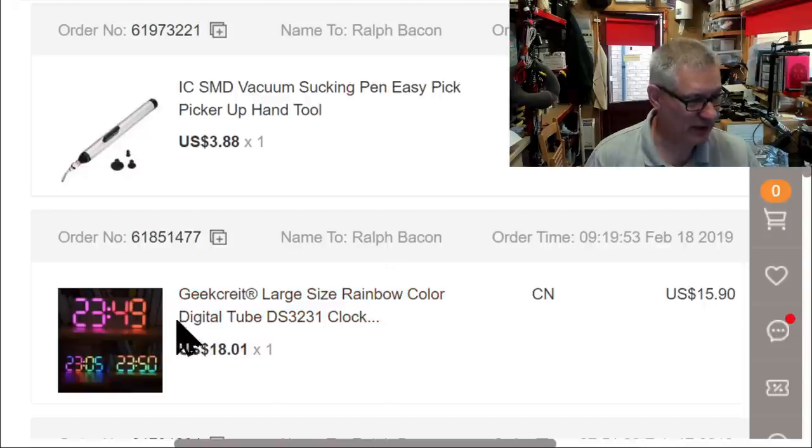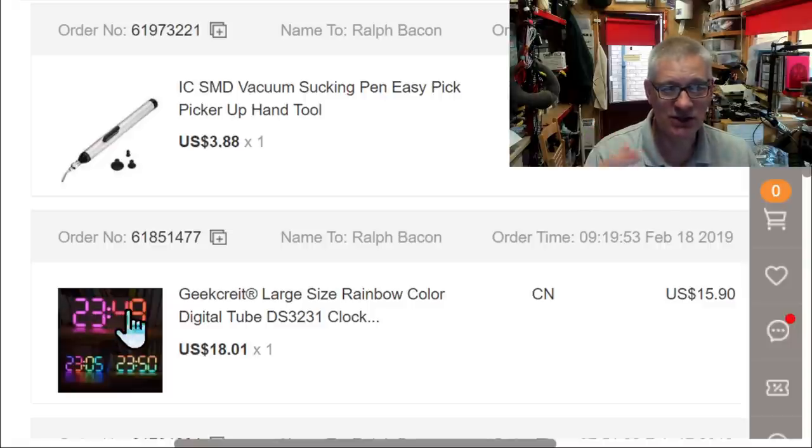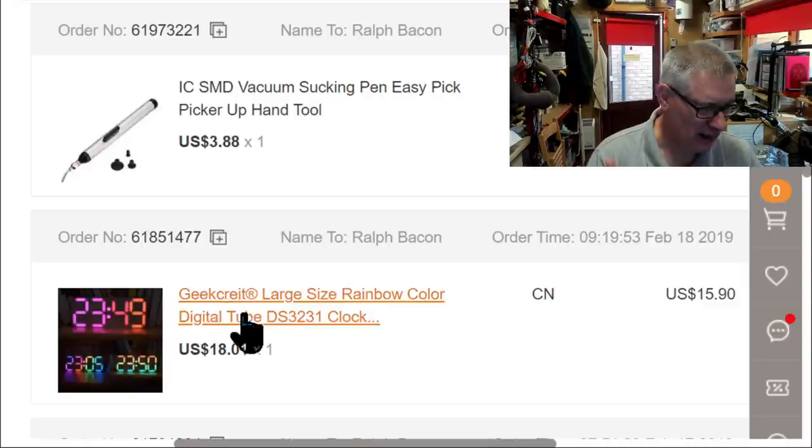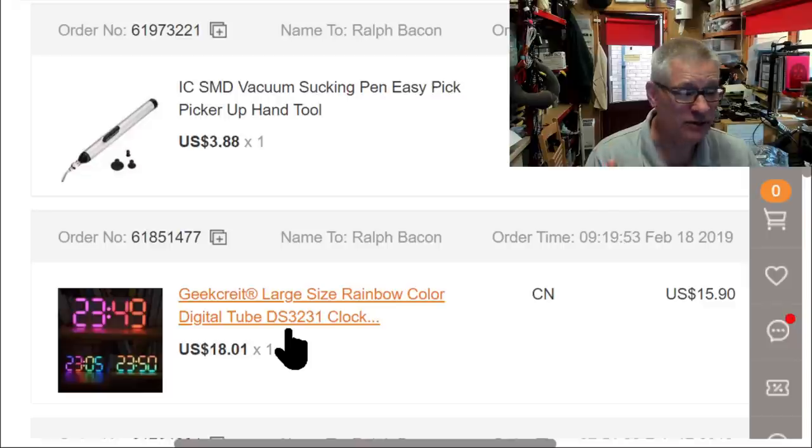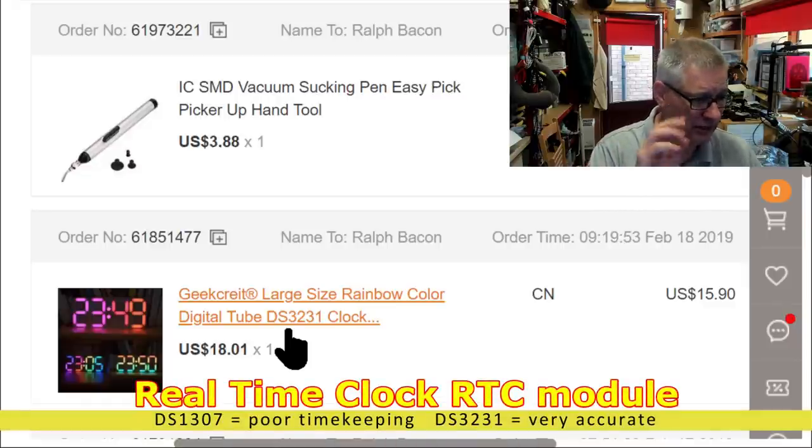So you can see here, this is what the kit is I'm actually building. It's a rainbow clock, which means all the elements can be changed in different colors. I don't quite know how it does that. Perhaps it's just automatic. But it does use a 3231, which is the deal maker for me.